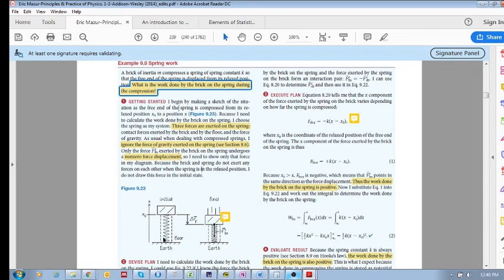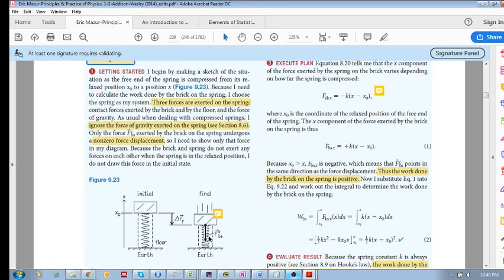Well, first of all, we know that the force of the brick on the spring is equal and opposite to the force of the spring on the brick. Okay? Right? It's a contact force. They're an interaction pair. So the force of the brick on the spring equals the force of the spring on the brick.